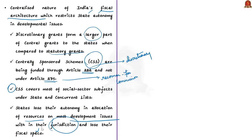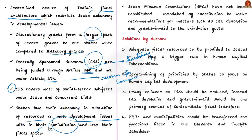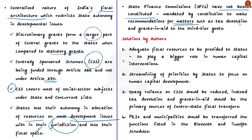States therefore cannot implement plans according to their needs. Coming to the next issue: in many states, state finance commissions have not been constituted, even though they are mandated by the constitution to make recommendations on tax devolution and grants-in-aid to third-tier governments. Based on these issues, the authors have suggested solutions to ensure a better way forward towards developing human capital.